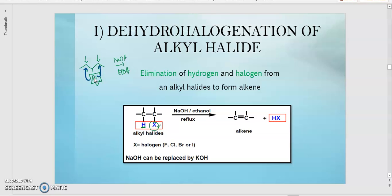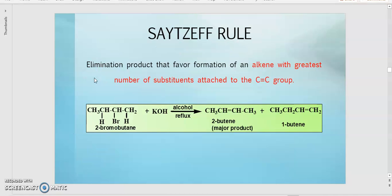So for the dehydrohalogenation reaction, since there can be multiple possible removals of hydrogen, we need to consider the Zaitsev's rule. Zaitsev's rule states that the elimination product that is favoured is the formation of the alkene with the greatest number of substituents attached to the C=C group. Meaning that the carbon with the greater number of substituents will become the major product, while the other one will be the minor product.